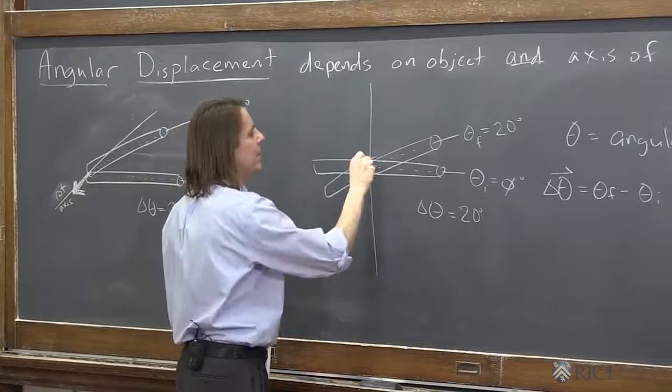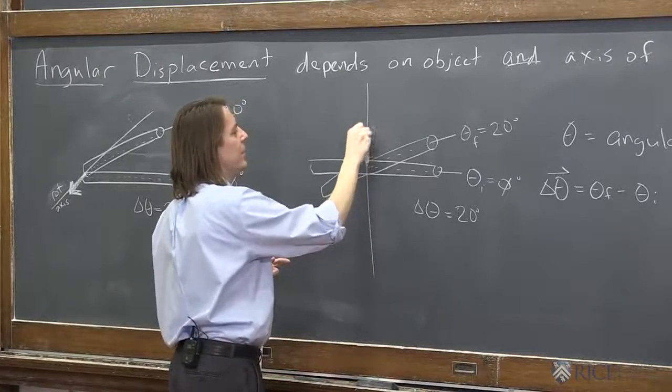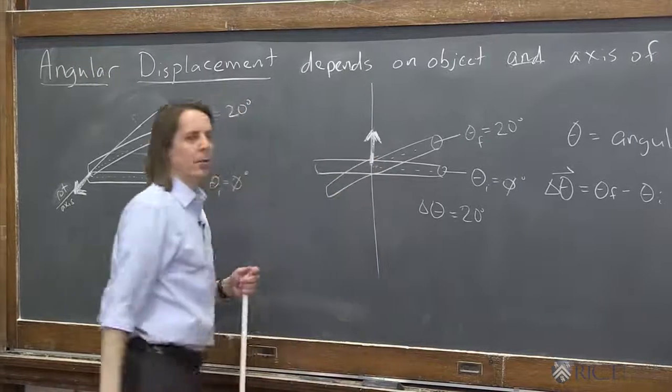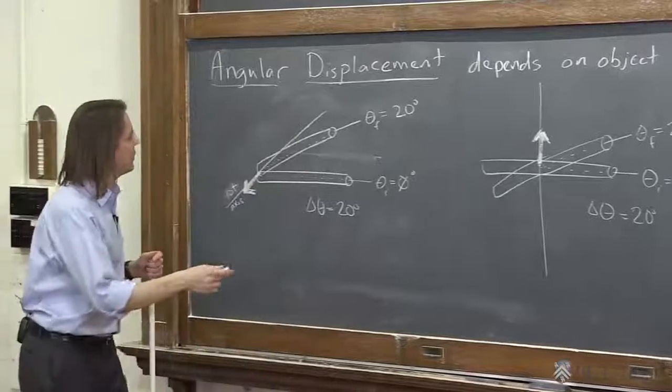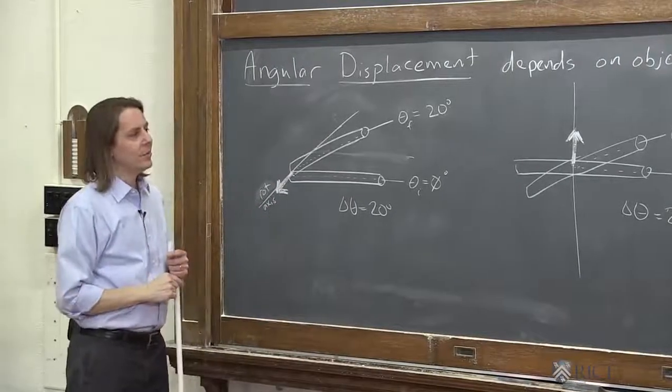Here, if we went from here to here, the delta theta vector, the angular displacement, is that way. The only question remaining is what is the direction. So we'll get to that in the next one.